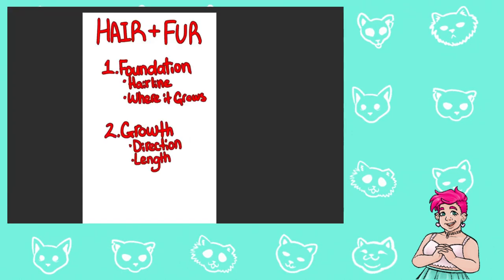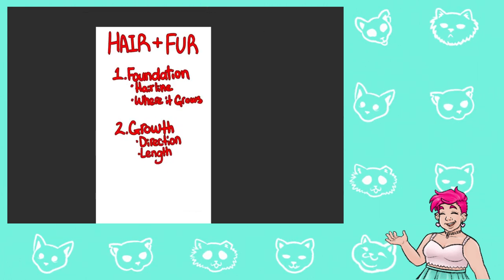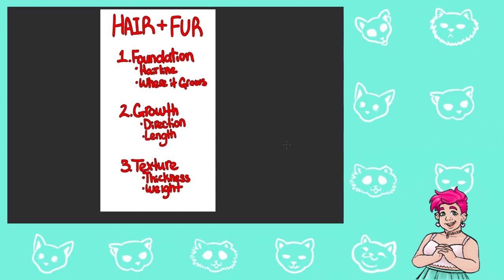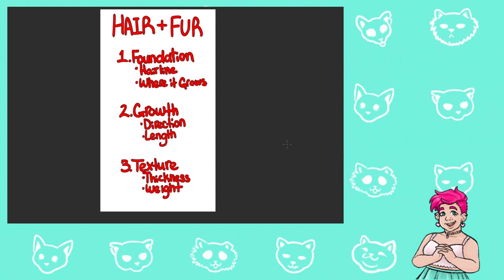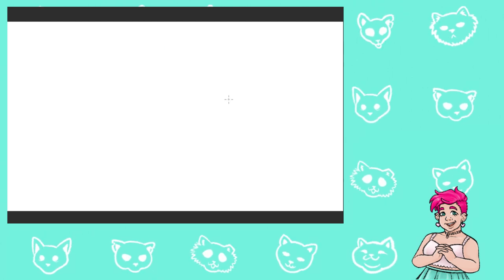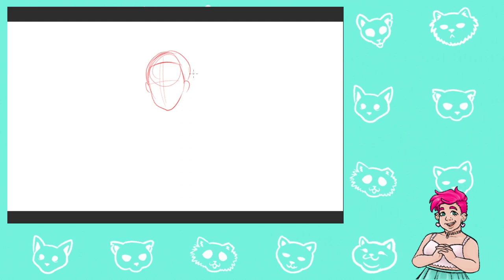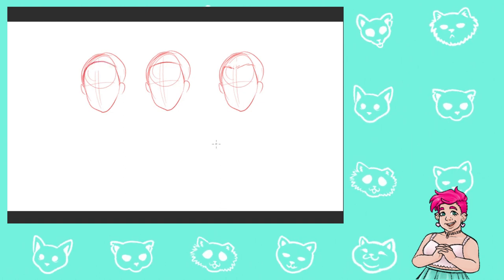Now it's time to talk about texture. This is where I'll talk more about how you can show the coarseness — or as I like to say, the thickness of hair — as well as how to draw different hair types and styles, and how they affect the weight, which changes the way it looks depending on how it's styled and drawn. I could make a whole video just drawing different types of hair in various haircuts and styles, but for this video I'll just do two examples of three different hair types, each with a different hairline.